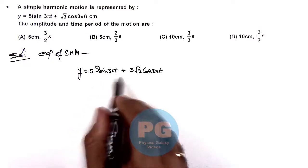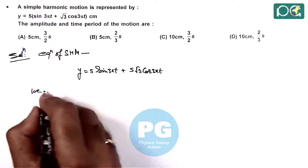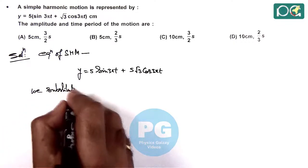This is in form a₁ sine ωt plus b₁ cos ωt. So here, we substitute.